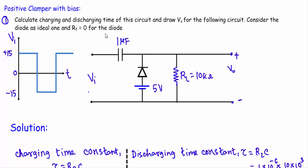In this video I'm going to show you two consecutive examples using positive clamper circuit, but this time I will add some biasing voltage in the basic positive clamper circuit. These two circuits are really hard, so concentrate on how I am calculating and what steps I am following. Let me read out the first question.